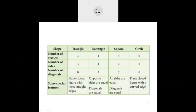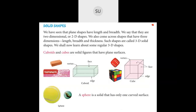So this was all about what we have learnt up till the last class. In today's class we will study solid shapes. We have seen that plane shapes have length and breadth — that is two dimensions, so we call them 2D shapes. But most of the time we come across shapes that have length, breadth, and thickness — that is three dimensions. Such shapes are called 3D solid shapes or three-dimensional shapes.